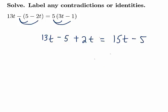Now we'll collect like terms on each side of the equation. So on the left-hand side, we have 13t's plus 2t's, giving us 15t's, and we have a minus 5.